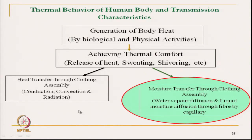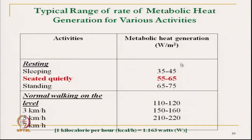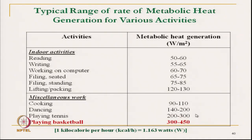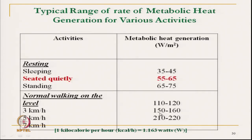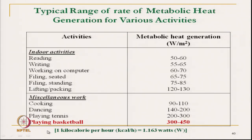Now we will discuss in detail the dry heat transmission. As activity increases, metabolic heat generation increases. When we sleep, the body generates around 35 to 45 watts per square meter. When we play a highly active game, we may generate approximately 10 times that amount of heat.